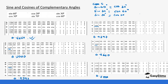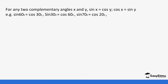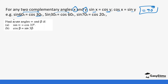What this tells us is that for complementary angles, if x and y are complementary, then sine x equals cos y and cos x equals sine y. The two angles add up to 90 degrees. You can see that sine 60 equals cos 30 because 60 plus 30 is 90. Similarly, sine 30 and cos 60 give 90, and sine 70 and cos 20 also give 90.